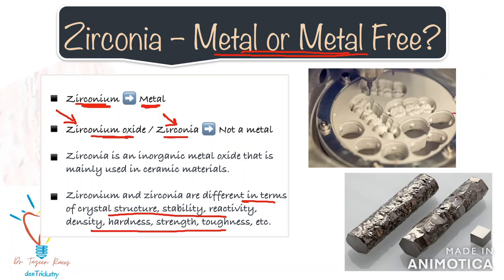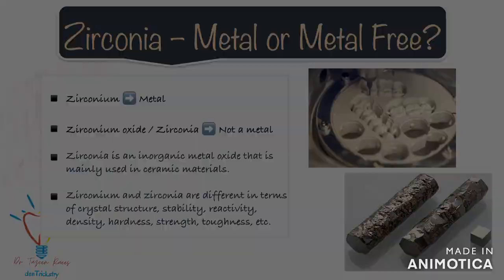Every ceramic has a crystal structure containing both metallic and non-metallic atoms, but the combination is never referred to as a metal, nor does it behave as a metal. So to conclude, zirconia, like many ceramics, contains metal atoms, but it is not a metal.